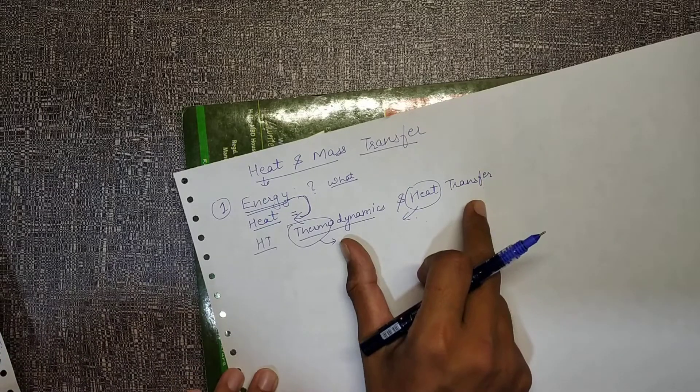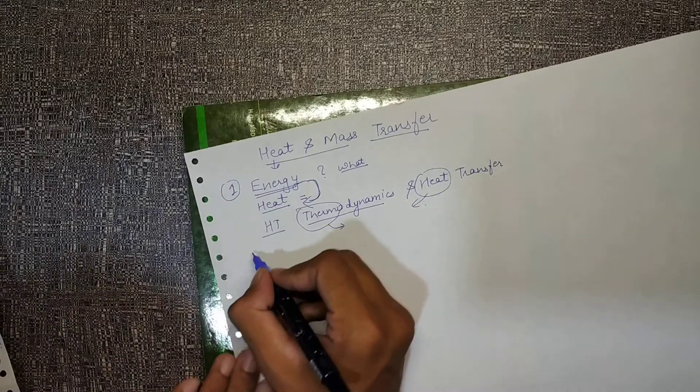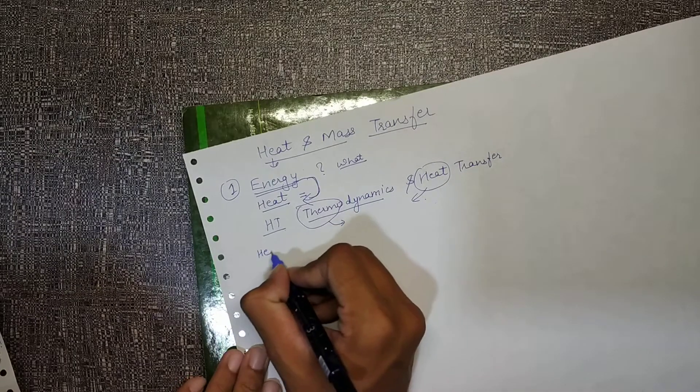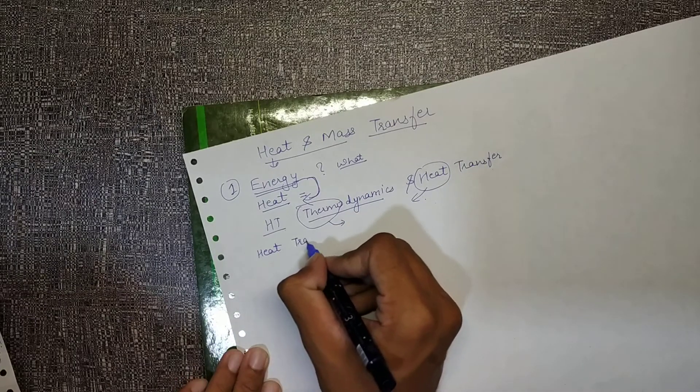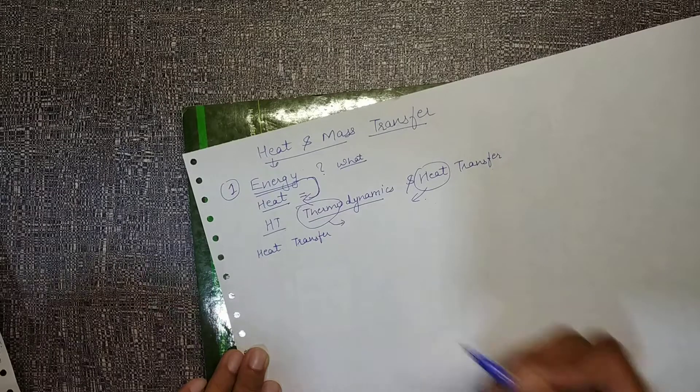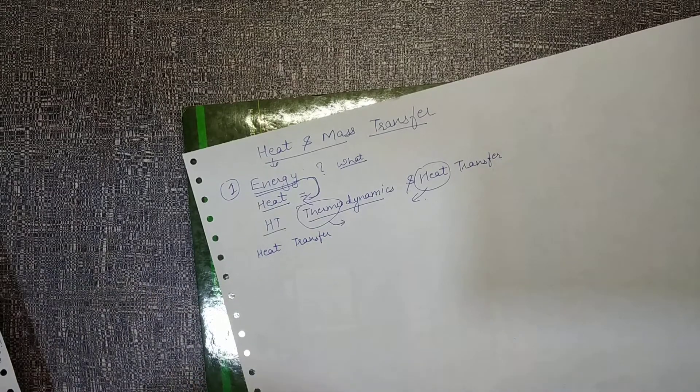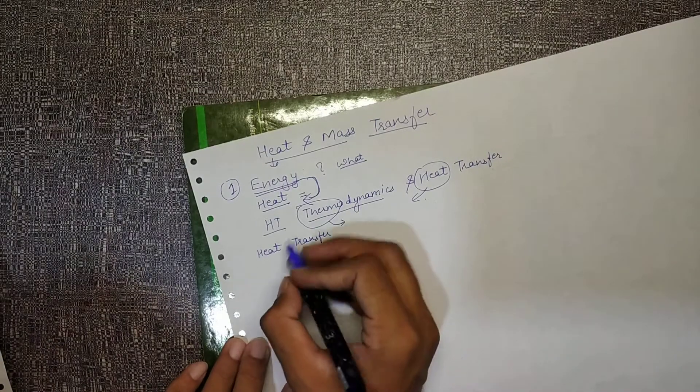We'll go into this difference. Then we'll understand the different ways of heat transfer. There are three main ways: conduction, convection, and radiation. We'll study that and then go into the details of those.